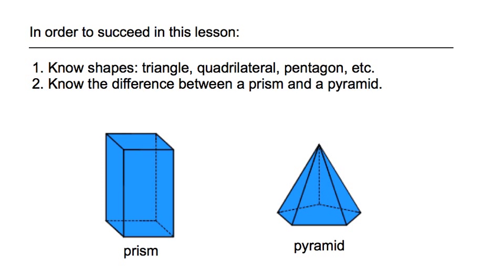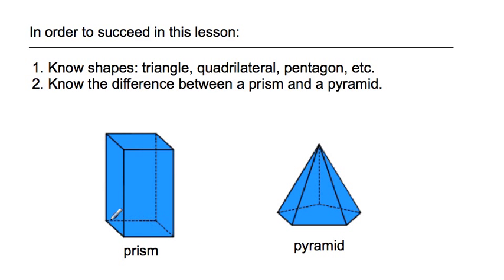In order to succeed in this lesson, you're going to have to know a couple of things. Number one, you're going to have to know your shapes: triangle, quadrilateral, pentagon, rectangle, squares — all of that. And then number two, know the difference between a prism and a pyramid. Notice that the pyramid comes to a point from a base shape — all of the lines from each corner go up to a point. On the prism, you have a base shape on the bottom and a matching base shape on the top.